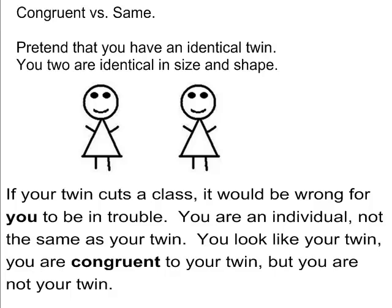My example for this is if you pretend that you have an identical twin, the two of you are identical in size and shape. But if your twin cuts a class, it would be wrong for you to be the one that's in trouble because it's your twin who cut the class. So you are not the same. You are just identical in size and shape. You are congruent with your twin. You are an individual, not the same as your twin. You look like your twin. You are congruent to your twin, but you're not your twin.